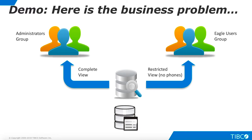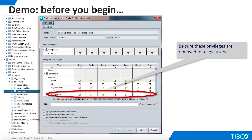In this demo, we'll create a view that returns all columns for administrator users, but restricts the phone number columns for members of the Eagle Users group. You can create an Eagle Users group and give it no rights. If you have run this demo before, make sure that the customers table from the DS orders data source in the examples folder has no permissions set for the Eagle Users group.